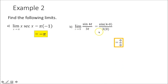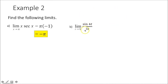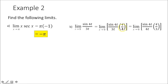Next, plugging 0 in for each of the t's gives 0 over 0, an indeterminate form, so we must go back and simplify. Anytime you see sine of something over something like that, you want to use the special limit — we want to get sine of 4t over 4t. Multiply the numerator and denominator by 4. Using the commutative property, we get sine of 4t times 4 over 4t times 3, which simplifies because the limit as x approaches 0 of sine of 4t over 4t equals 1. Using the scalar multiple rule, 4/3 times 1 gives you 4/3.